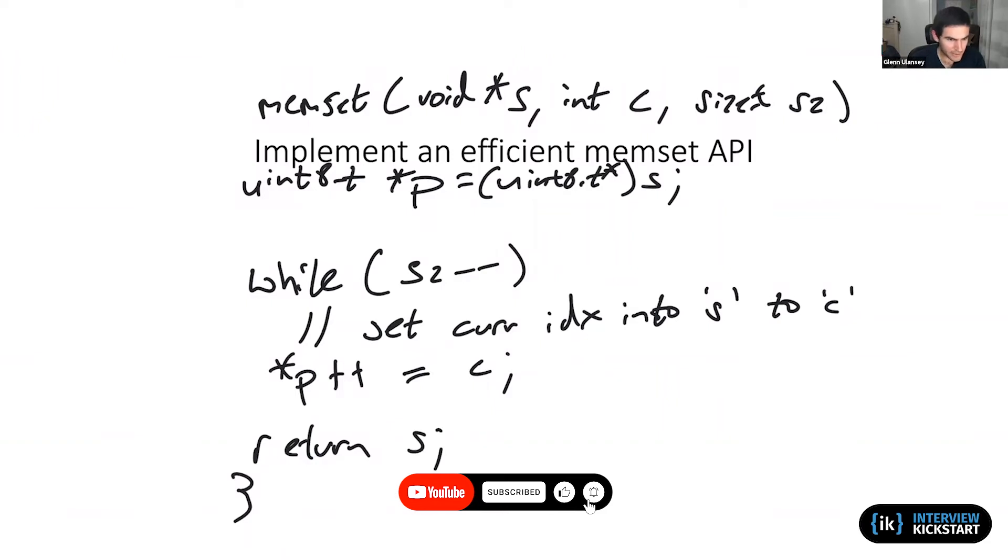So that's the basic implementation of memset and it wouldn't be unreasonable for anyone here to be expected to do that. There's a couple potential pitfalls you might want to throw into the mix, such as the parameter being a four byte integer as the data type, but we said we're only trying to set one character at a time.